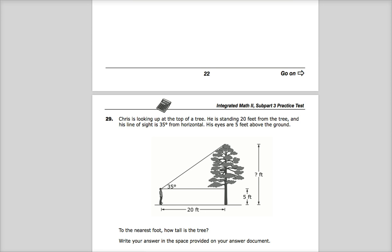Question says, Chris is looking up at the top of a tree. He's standing 20 feet from the tree and his line of sight is 35 degrees from horizontal. His eyes are 5 feet above the ground. To the nearest foot, how tall is the tree?